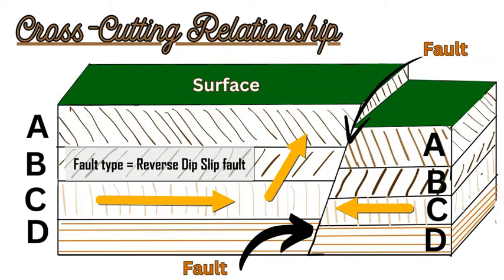In this case we have a fault line producing a fault scarp. This is a reverse dip-slip fault where rocks A, B, C, D on the left are being pushed up through compressional tectonic forces, while the rocks on the right-hand side have stayed at the same original level or elevation. So we have an uplift situation on the left side of the surface.